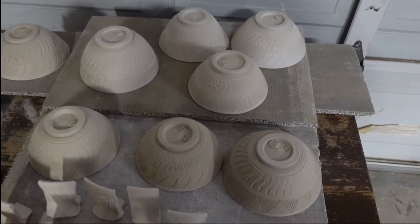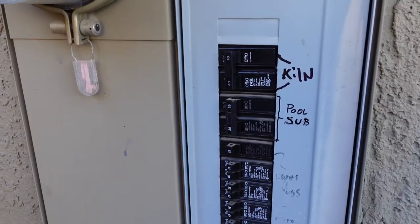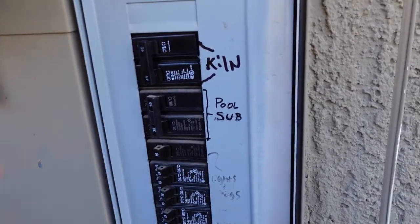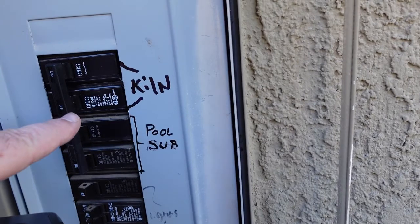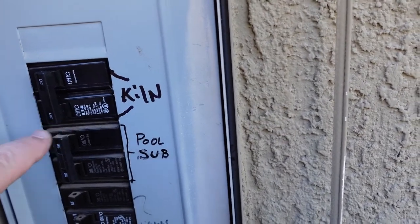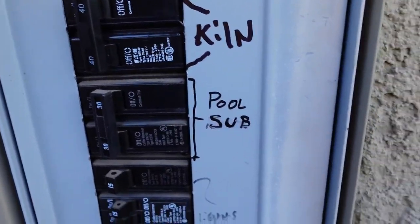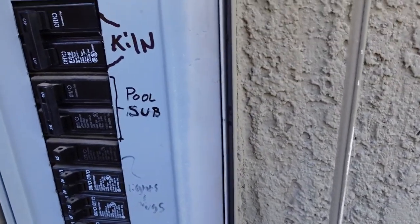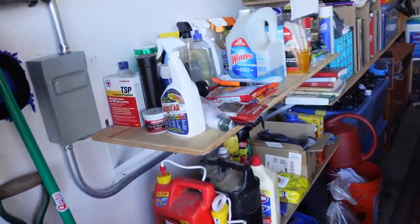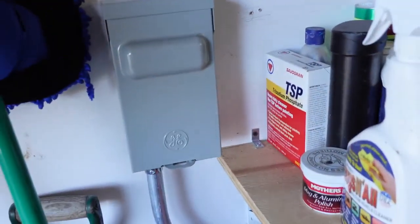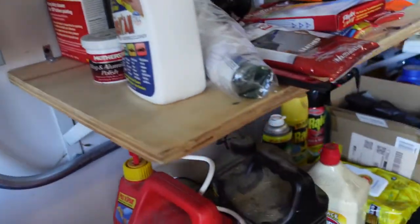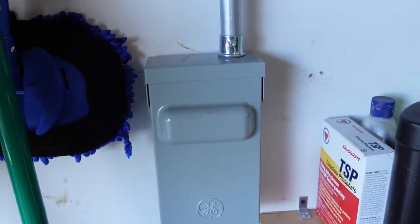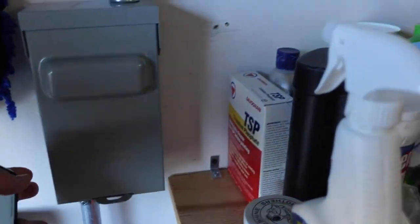I brought you out here to my electrical panel. You can see here that I had a new breaker put in for my kiln. It's 40 amps. I had room for it fortunately, so I didn't have to worry about replacing my panel or anything. You can see I had an emergency cutoff put in.